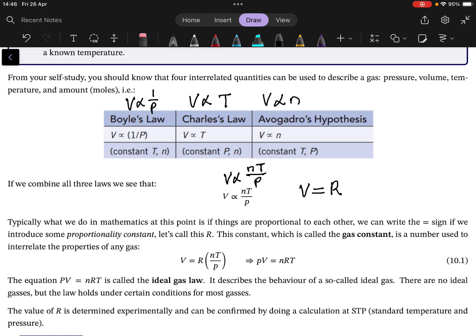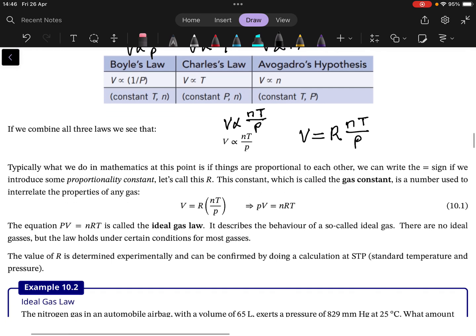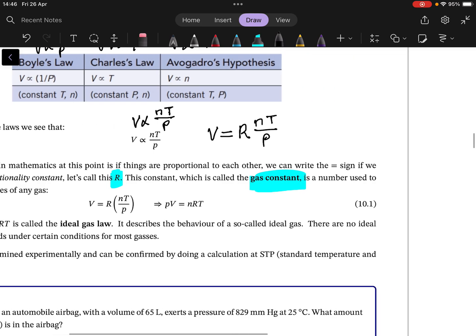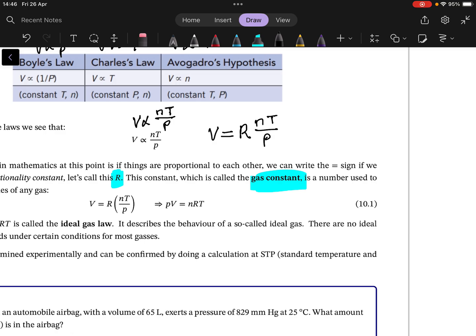We can substitute the proportionality with an equal sign by introducing some proportionality constant, or in other words just introducing a constant. And in this case this constant is called the gas constant.